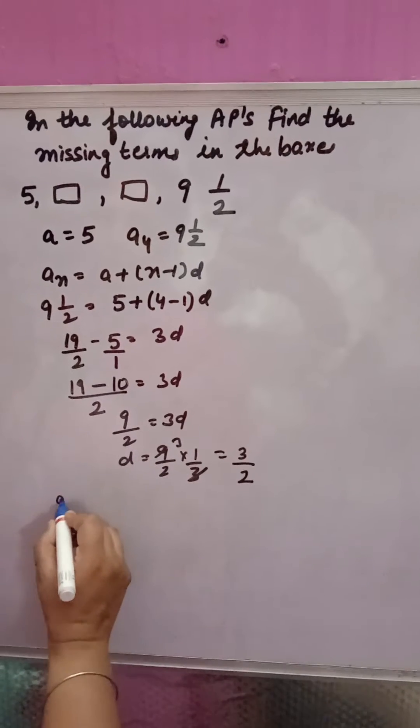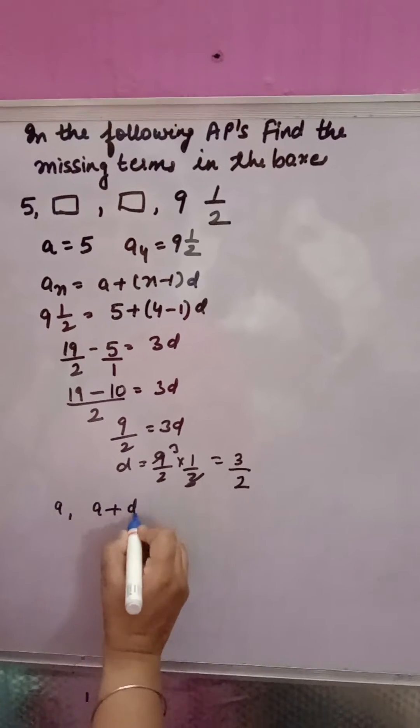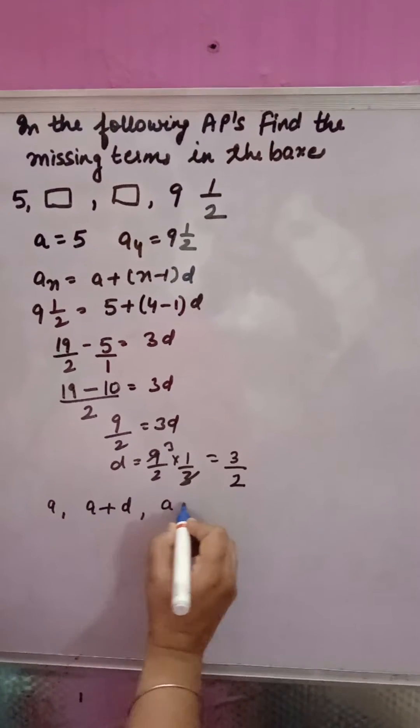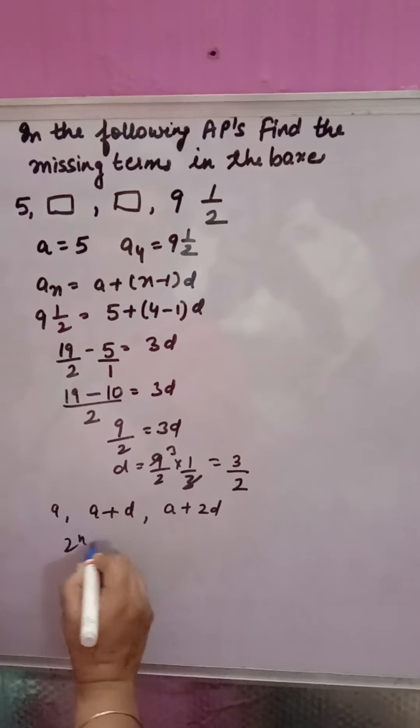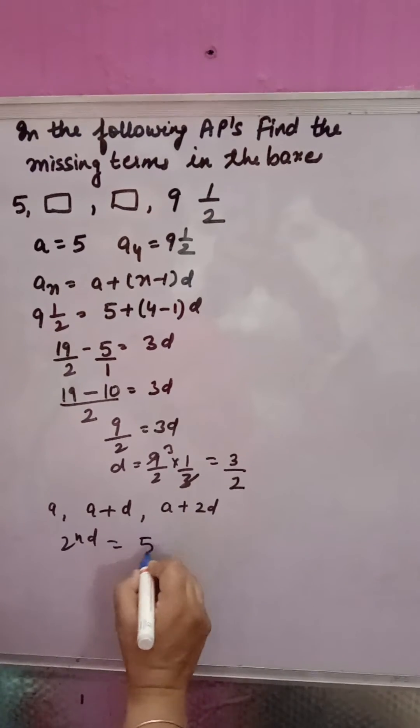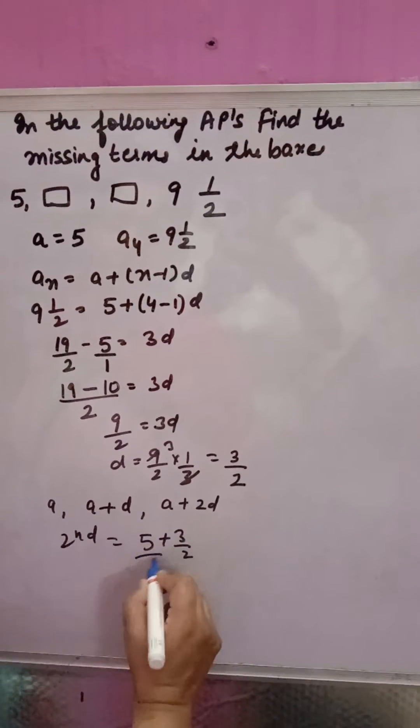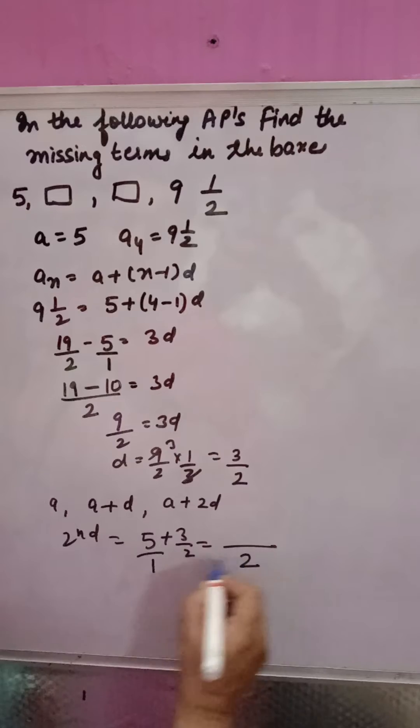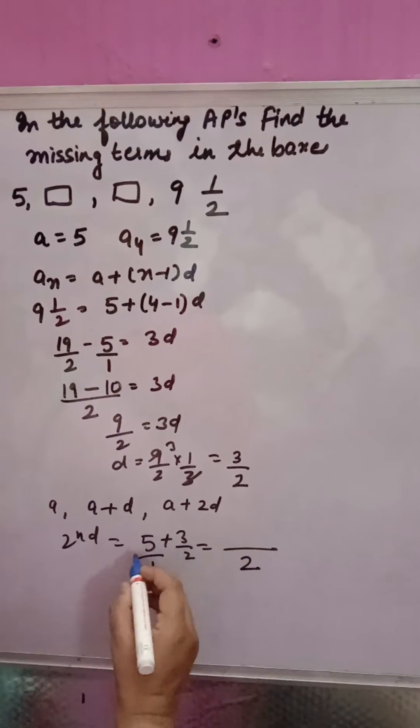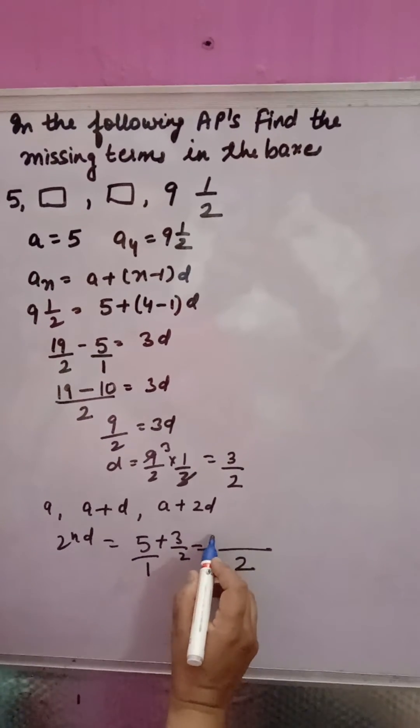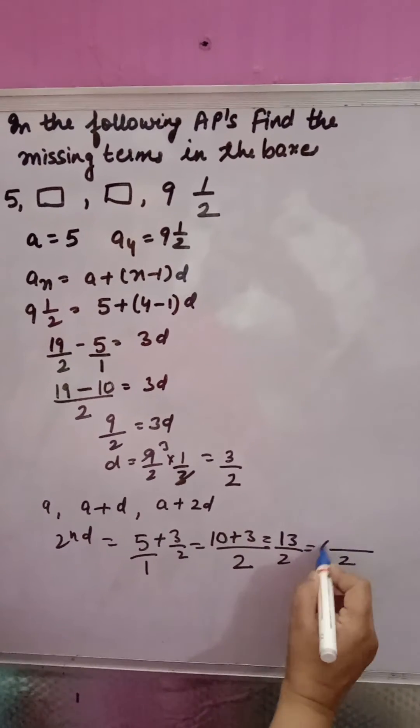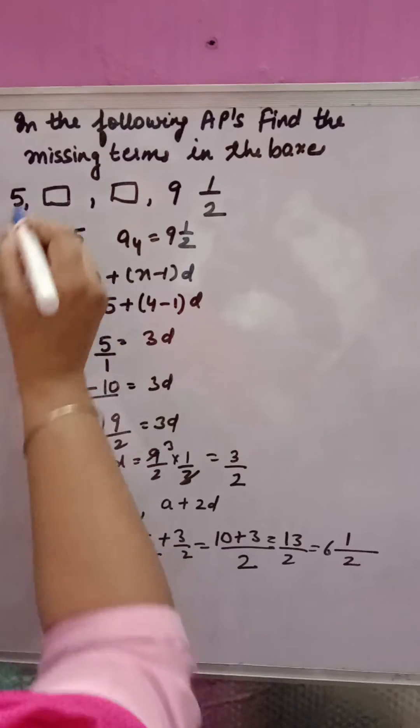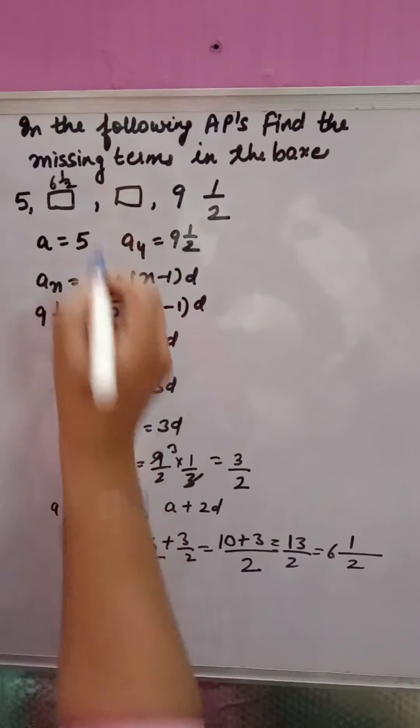Now, first term is a, second is a + d, third is a + 2d. So first is already given. Second term will be 5 plus 3 by 2. Nothing is there, so 1. LCM is 2. 2 divided by 1 is 2, 2 into 5 is 10 plus 3, so 13 over 2. In mixed form you can write 6½. So first box: 6½ will come.